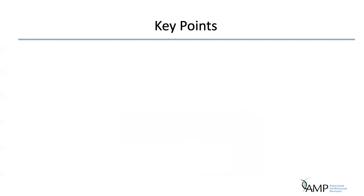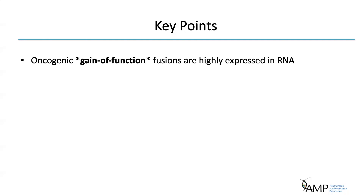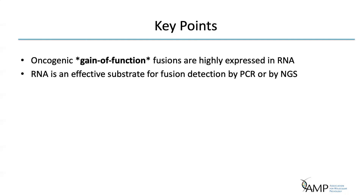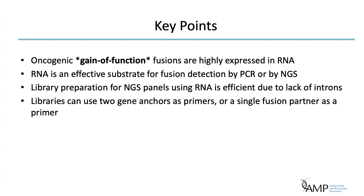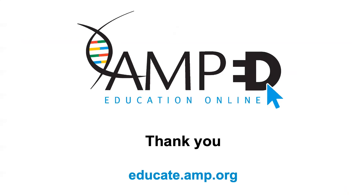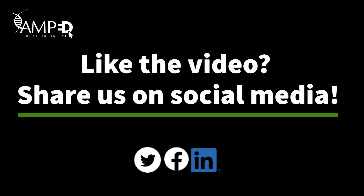To review the key points: oncogenic gain-of-function fusions are highly expressed in RNA. RNA is an effective substrate for fusion detection by PCR or by NGS. Library preparation for NGS panels using RNA is efficient due to the lack of introns. Libraries can use two gene anchors as primers or a single fusion partner as the primer. Thank you. For an advanced topic, please see the other recording by my colleague Dr. Valentina Nardi on how to interpret gene fusions.